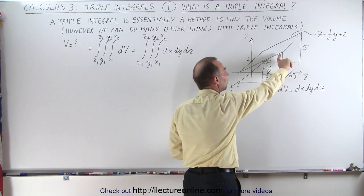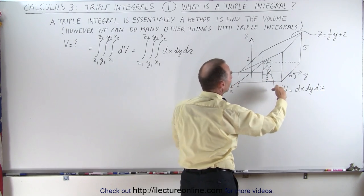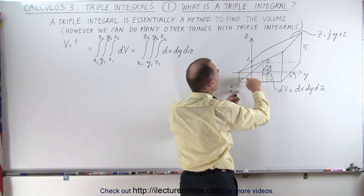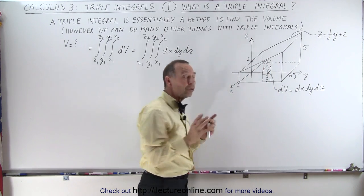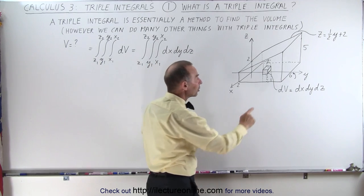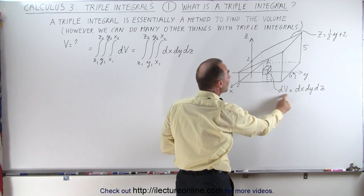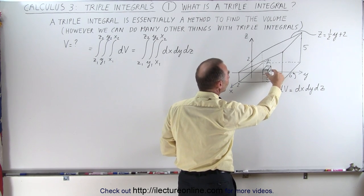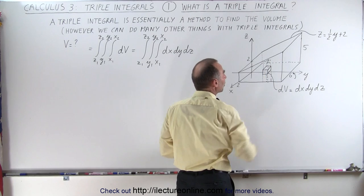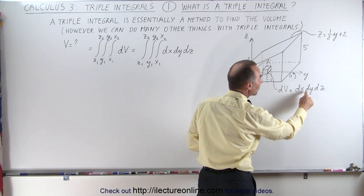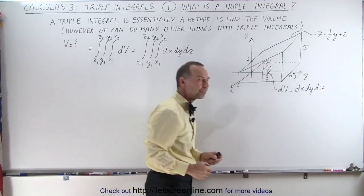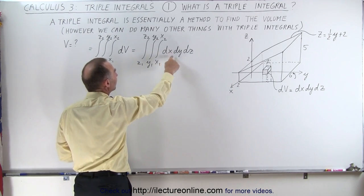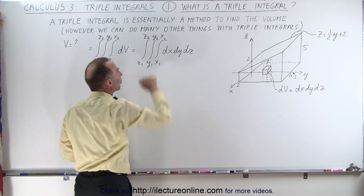The truncated wedge is two units high, five units at the end, six units long, and four units wide — two units from the origin on each side. We find a very small volume element dv, which is simply a product of the small change in the x direction, the small change in the y direction, and the small change in the z direction. So dv equals dx times dy times dz.